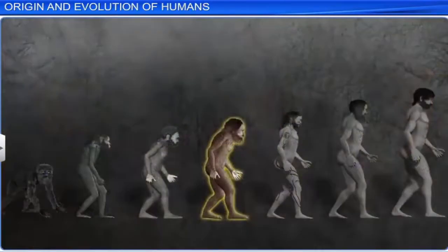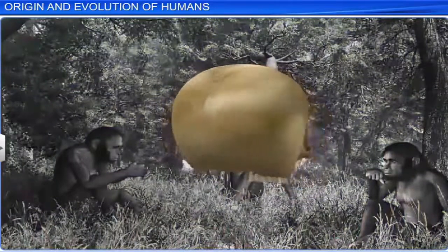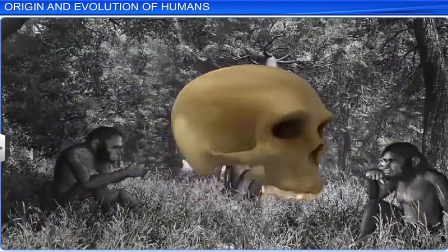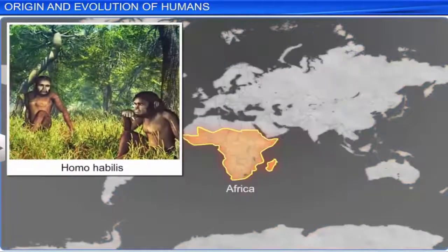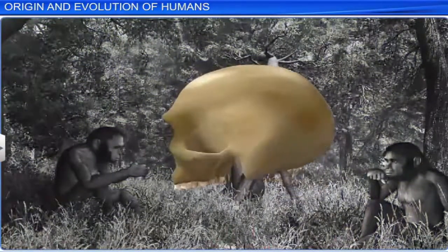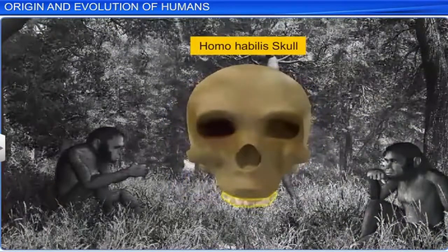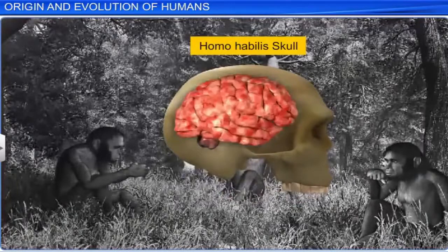The first human-like beings were Homo habilis, or the handyman, as their bones were similar to other Homo species belonging to the hominid family. They lived in sub-Saharan Africa between 2 million and 1.5 million years ago, and had probably evolved from Australopithecus africanus. Homo habilis had stronger teeth, which suggests they might have eaten hard plants and soft animals. The brain capacity was between 650 to 800 cubic centimeters.